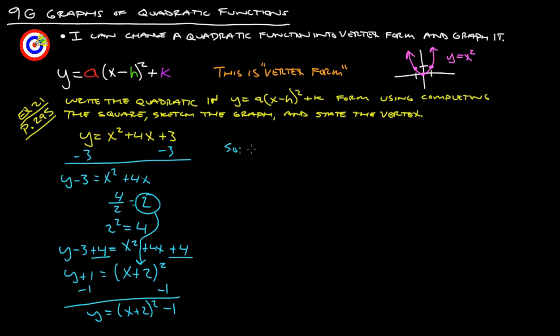So the vertex is negative 2 plus 2 gives us 0, so it's negative 2, and then it's whatever this vertical shift is here, which is negative 1. So if we go off to graph this thing, we'll start at negative 2, negative 1.